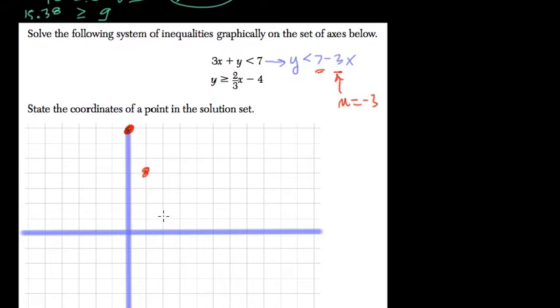And here y is less than this, so we draw a dotted line, not a solid line, because we don't include where y equals 7 minus 3x. It's below it, so we just shade below.